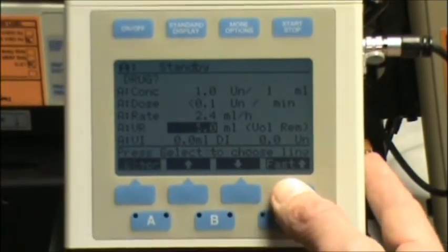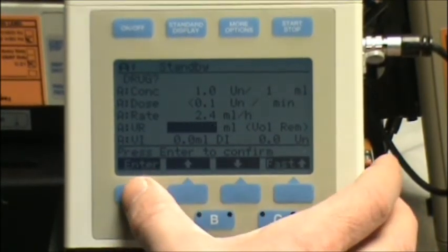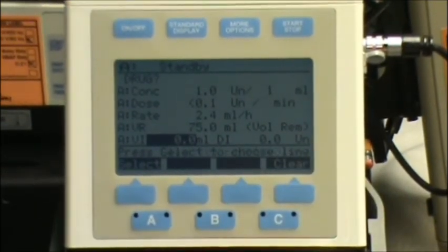Volume remaining. I'm just going to simulate I have a 100 ml bag. Put in 75 so my tubing doesn't run dry. And then press start.